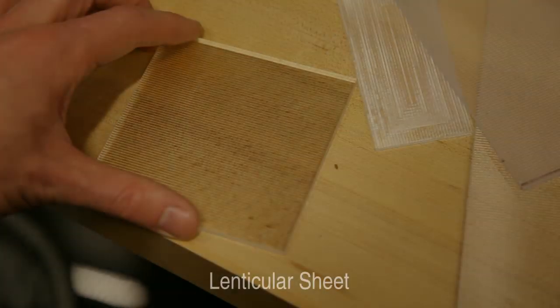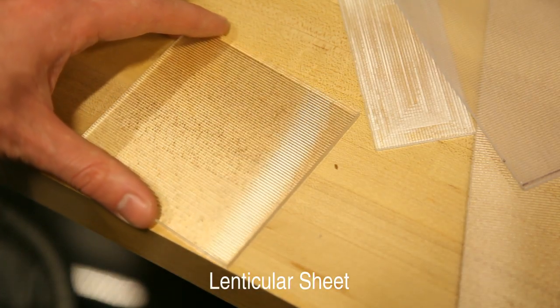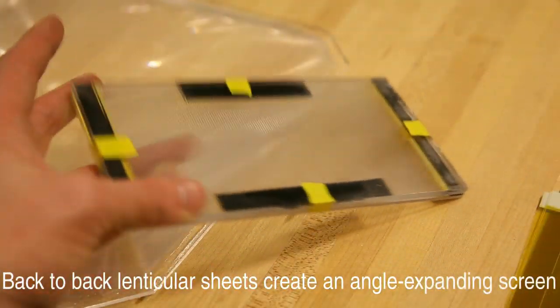In practice, it is possible to construct a horizontal-only angle-expanding screen using lenticular sheets. In this clip, we demonstrate such a screen, which we fabricated from back-to-back lenticular sheets of different focal lengths.